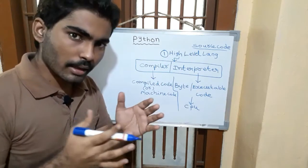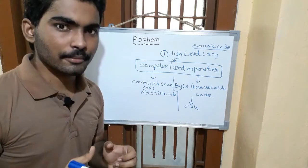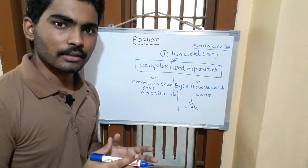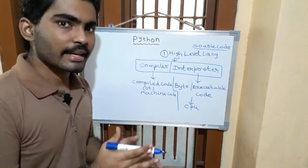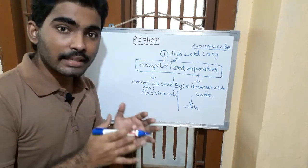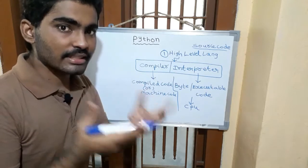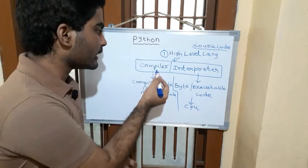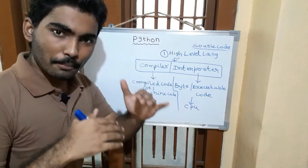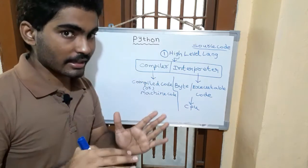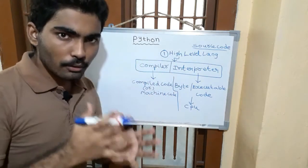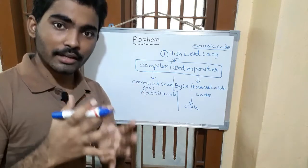The microprocessor does not understand any high-level language — there is a lot of machine code in the microprocessor. So what we do is convert this high-level language into machine code. There are two tools for this: compiler and interpreter.